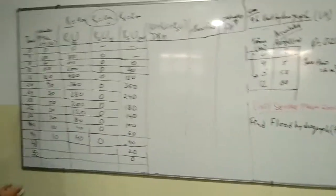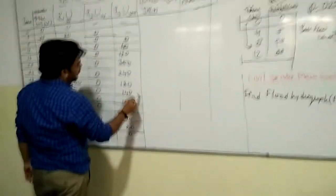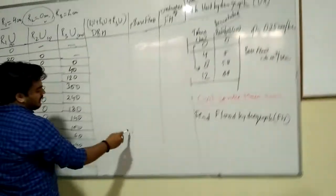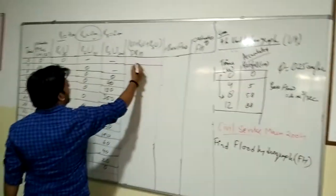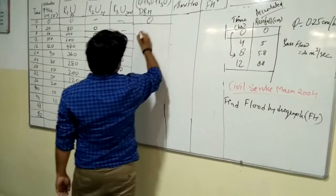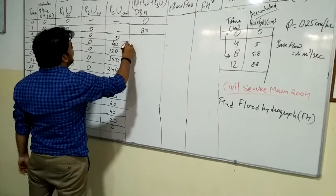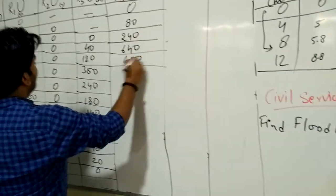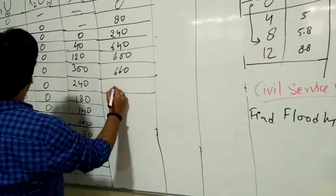Since the rainfall is lagged by 8 hours, the R3·U ordinates begin after 8 hours. For calculating the DRH, we add these three sets of values. Summing: 0 + 0 + 0 = 0; 80 + 0 + 0 = 80; 240 + 0 + 0 = 240; 600 + 0 + 40 = 640; 480 + 0 + 120 = 660. This process is continued for all unit hydrograph ordinates to obtain the complete DRH.